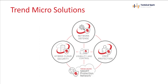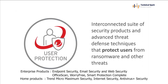Before we start the discussion of Deep Security, let's review the security solutions offered by Trend Micro. Trend Micro provides layered content security with interconnected solutions that share data so that you can protect your users, network, data center, and cloud resources from data breaches and targeted attacks. There are multiple products across four segments — we'll cover those in different series — but here is a quick recap: user protection includes an interconnected suite of security products and advanced threat defense techniques that protect users from ransomware and other threats.